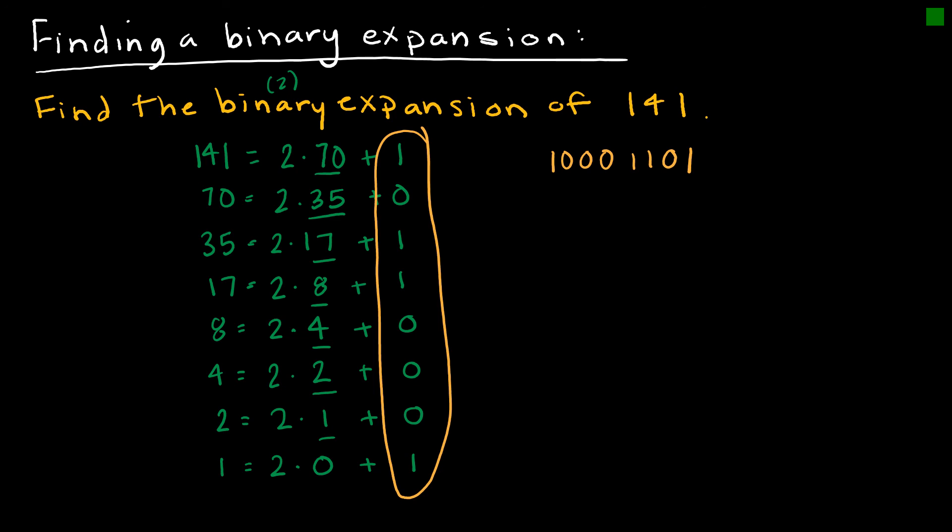Now keep in mind when we write things in binary, typically we write them in groups of 4. So I would write 1, 0, 0, 0, 1, 1, 0, 1, base 2 would be my final answer.